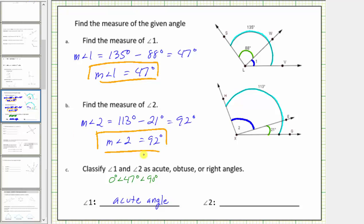Angle two measures 92 degrees. Since 92 degrees is greater than 90 degrees and less than 180 degrees, angle two is an obtuse angle.